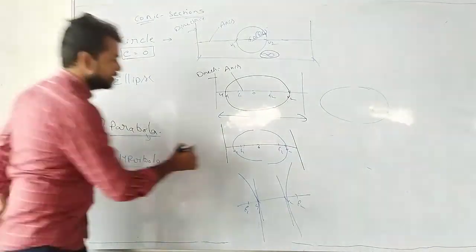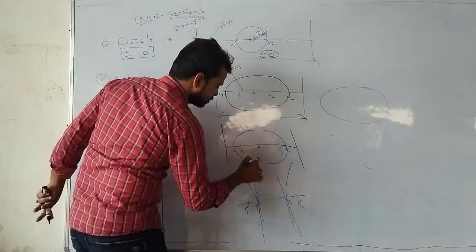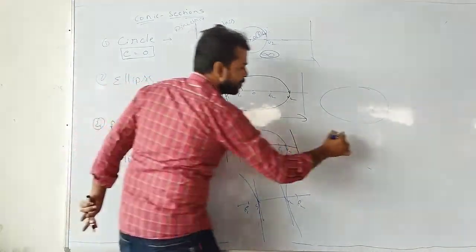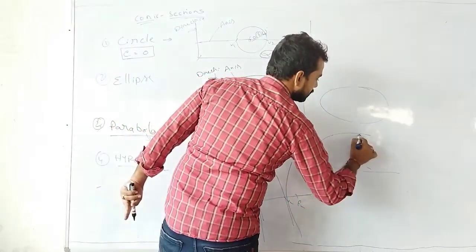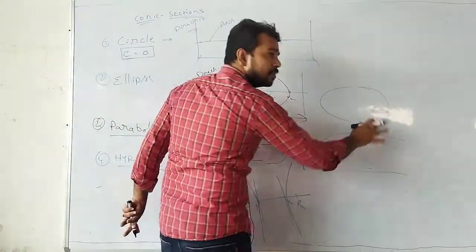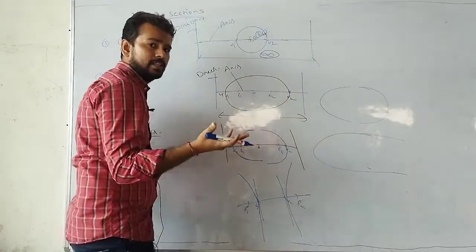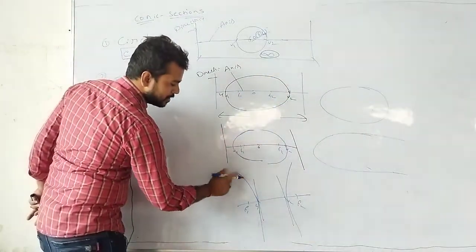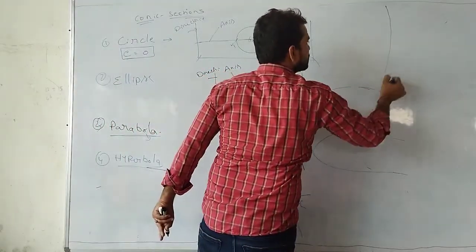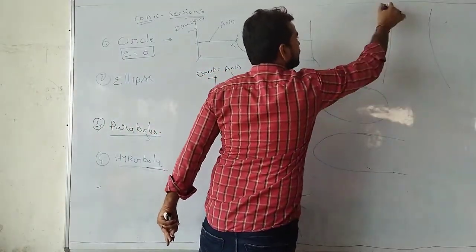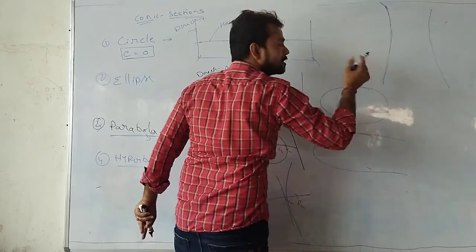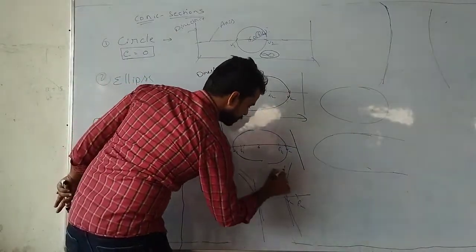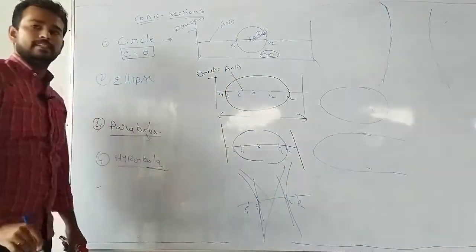For parabola, the two arms become parallel at infinity — they will meet but we cannot see it. For hyperbola the endpoints are not parallel with each other — that is why it is hyperbola. You will get asymptotes in hyperbola.